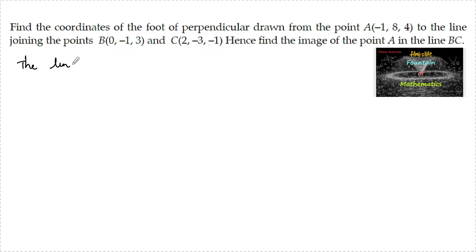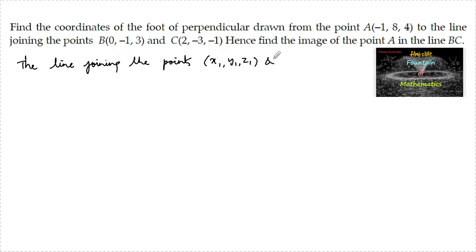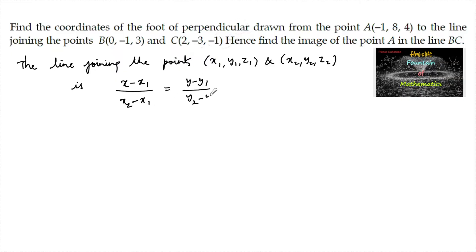The line joining the points (x1, y1, z1) and (x2, y2, z2) is given by: (x - x1)/(x2 - x1) = (y - y1)/(y2 - y1) = (z - z1)/(z2 - z1).